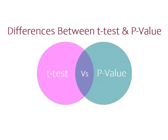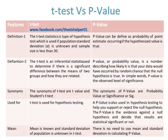Differences between t-test and p-value. Definition one of the t-test: a t-test is a type of hypothesis test which is used if the population standard deviation sigma is unknown and the sample size is less than 30.